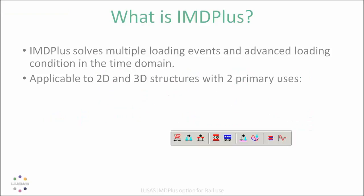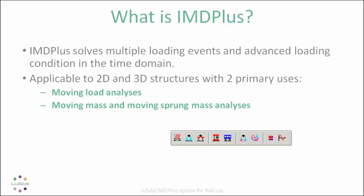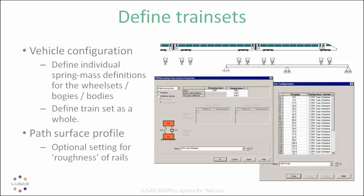IMD Plus basically allows you to build a complex model and then move across it either a moving load or a mass-spring system. With these moving loads or mass-spring systems, we're essentially building bogies or wheel sets for trains, and then attaching a number of them together to create a train set that we drive over the structure to look at the dynamic effects.